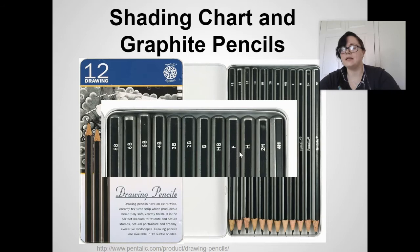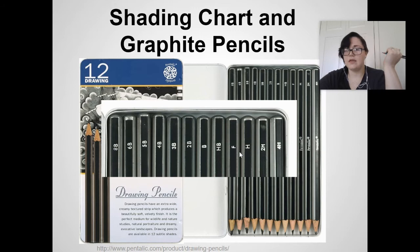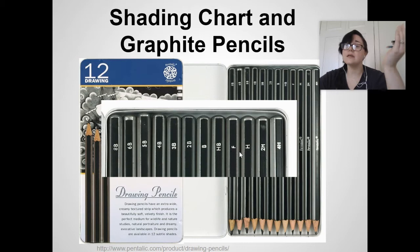At the end of each pencil there is a different designation — either a number and a letter, or just two letters. The turquoise one is the 6H, the regular black one is the HB, and the blue one is the 5B. Each pencil has its own unique task and job, which I'll get into a little bit later.